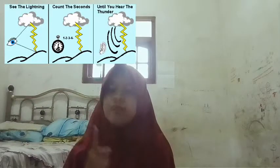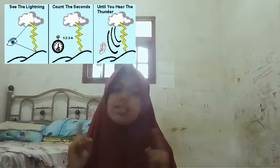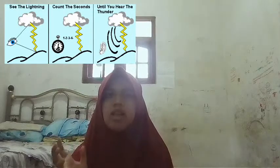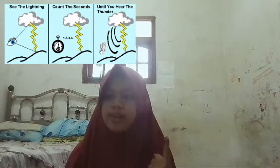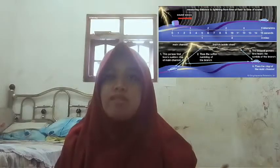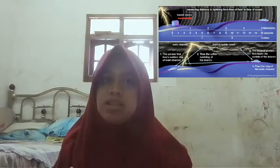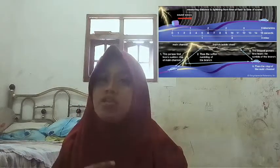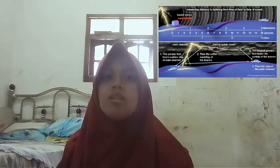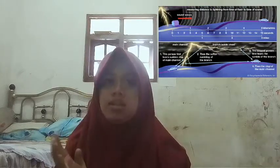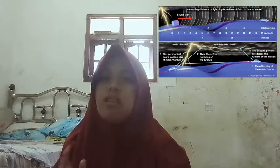First, you will see lightning. Count the seconds — three, two, one — until you hear the thunder. An observer's relative distance from the main lightning channel and its secondary branches determines whether the sound of thunder is heard as a sudden clap or a subtle rumbling.